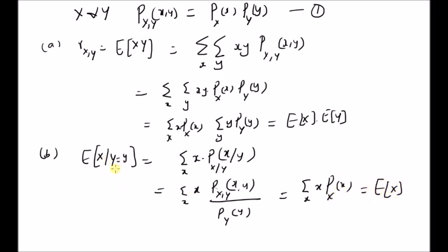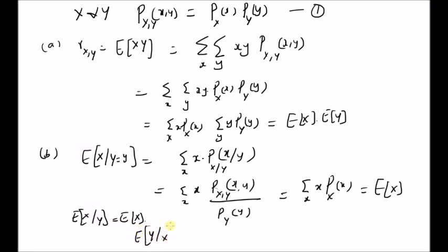For independent random variables, the conditional expectation of x given y is equal to the expectation of x. Similarly, along the same lines, we can also prove that the expectation of y given x is equal to the expectation of y.